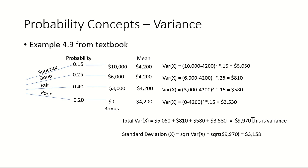The variance, the expected variance associated with this schema for handing out bonuses is $9,970. However, as we've said before, variance is not nearly as useful as the standard deviation.